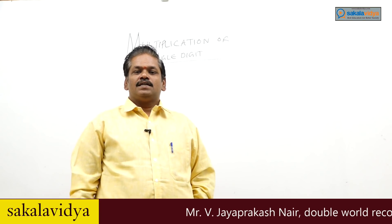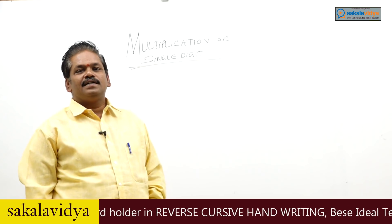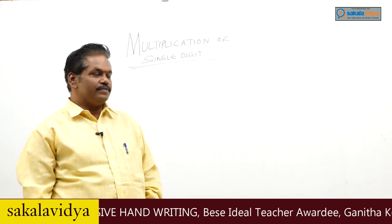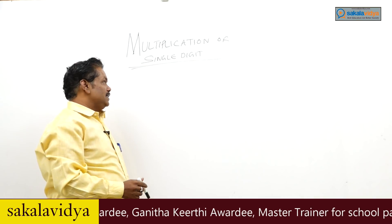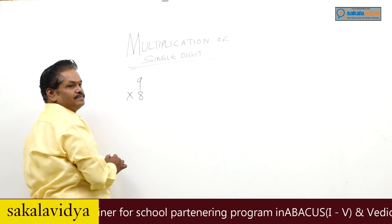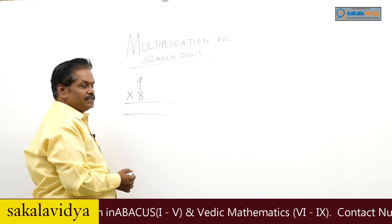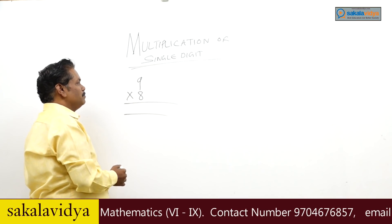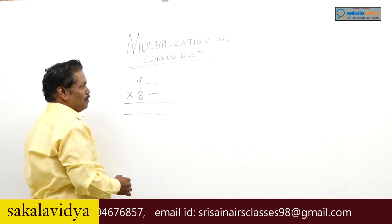Welcome to Sakhalvidya.com. In the last section we have seen the introduction part and complements. Now we have come out with multiplication of single digit, that is 9 into 8. Already we know what 9 into 8 is, but how to solve this by a simple method. In the previous session you learned the complements.